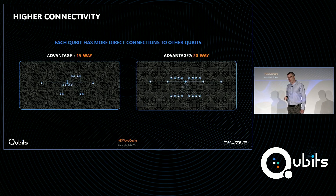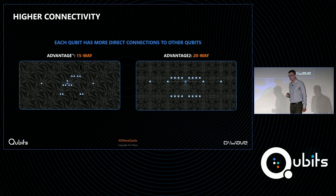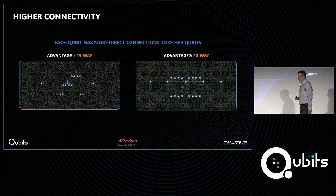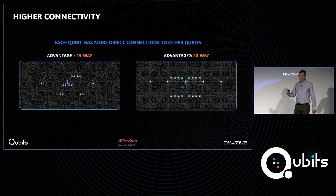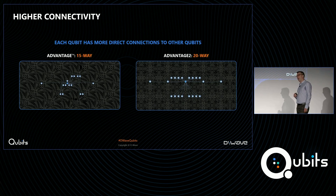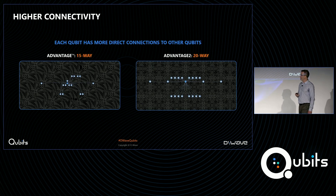Starting with the higher connectivity of the Advantage 2 processor — on the left, in the center, is a single qubit surrounded by 15 of its closest neighbors in the Advantage Pegasus topology, our current generation. On the right, again in the center, is a single qubit now surrounded by 20 nearest neighbors. The interaction between that center qubit and its neighbors are all programmable, and the arrangement is our new Zephyr topology. This depiction is created by our problem inspector, available as part of the Ocean SDK and within the Leap IDE.